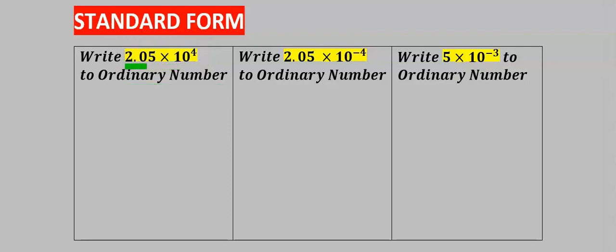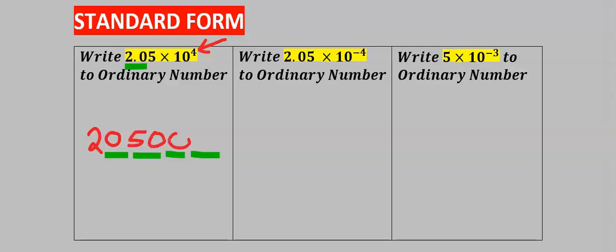Here we have a decimal after the two. The power of 10 here is four, which is positive — this is simply saying that after these two there are four digits. We can clearly see zero and five. To make it four digits, we're going to need two more zeros. The decimal is now gone, and this is our answer. Remember, this four is positive, which symbolizes a very large number.